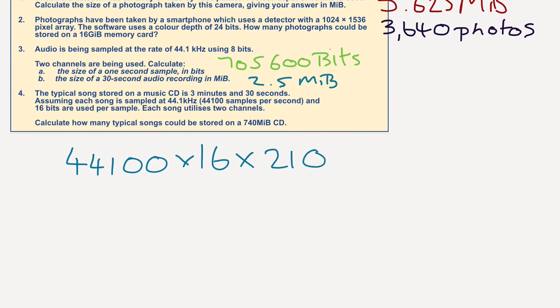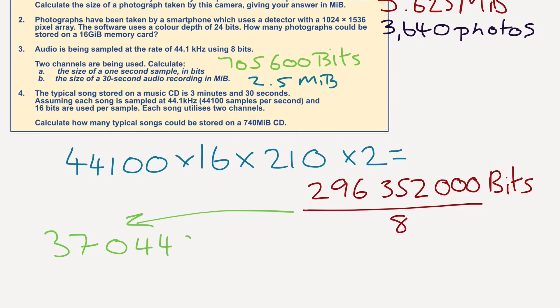60, 60, 60, 60, 180, plus 30. And then we're going to times it by 2, because each song uses two channels. So we get, in bits, a grand total, if we multiply all that together, 296,352,000 bits. So what are we going to do with that? Well, we're going to turn it into bytes, first of all, and then we've got to turn it into megabytes, the same as we did with the last one. So let's take this number, and we're going to divide it by 8 to get a total of 37,044,000 bytes.